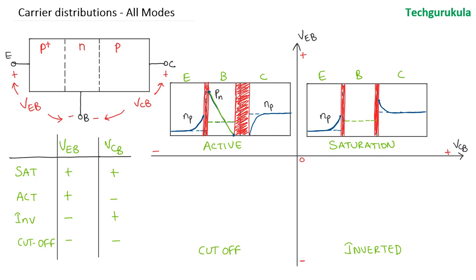Hence the carrier concentration would decrease. When we come to the base region, where injection is happening from both the emitter side and collector side, there would be a large carrier concentration in the base — high at this point and even at this point, but comparatively less near the collector region because of doping differences. Hence the carrier concentration would look like this in the saturation region of operation.